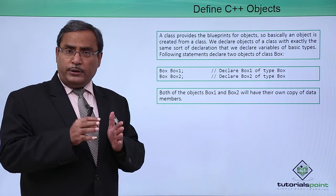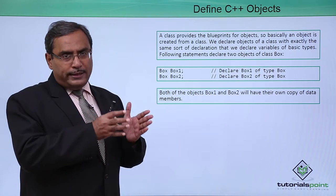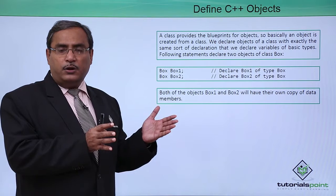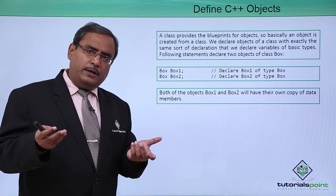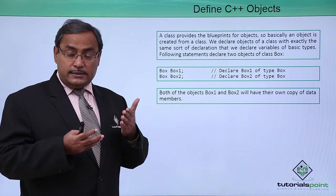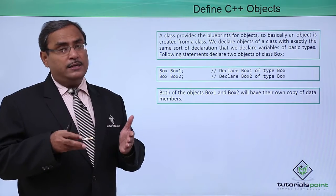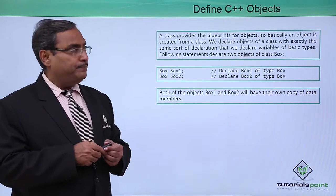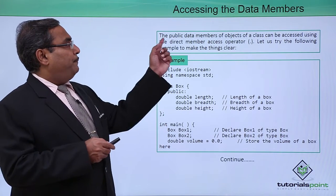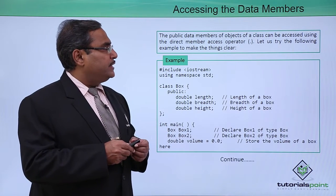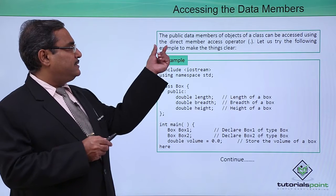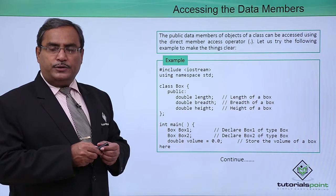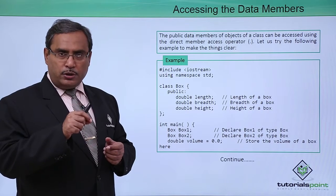Box1 will have its own width, length, and height with one set of values, and box2 will also have the three data members — length, width, and height — with a distinct set of values. The public data members of objects of a class can be accessed using the direct member access operator, which is the dot or period operator.